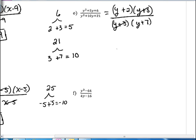This time, the y plus 3s are the same on top and bottom, so we can cancel those, and we'll be left with y plus 2 over y plus 7.